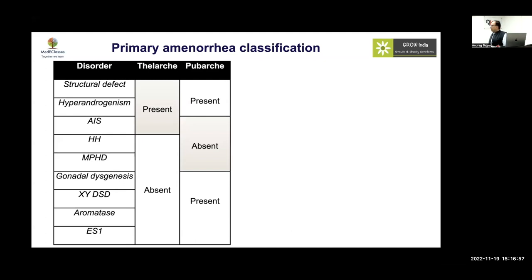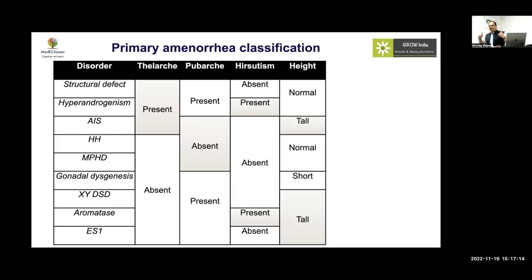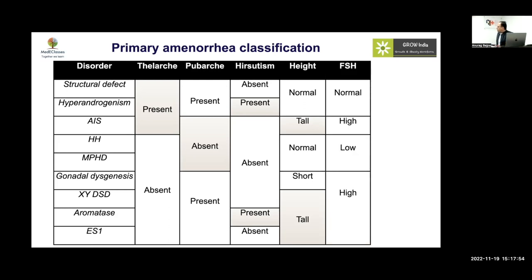To summarize: if there is no breast development and no periods, you are dealing with hypo- or hypergonadotropic hypogonadism. Absent pubarche with no breast development suggests androgen insensitivity or hypogonadotropic hypogonadism, possibly with severe systemic illness or multiple pituitary hormone deficiency. Hirsutism indicates hyperandrogenism. Height is crucial — delayed puberty should present with short stature, but tall stature with delayed puberty is a red flag, pointing toward androgen insensitivity syndrome, XY DSD, aromatase deficiency, or estrogen receptor defects.